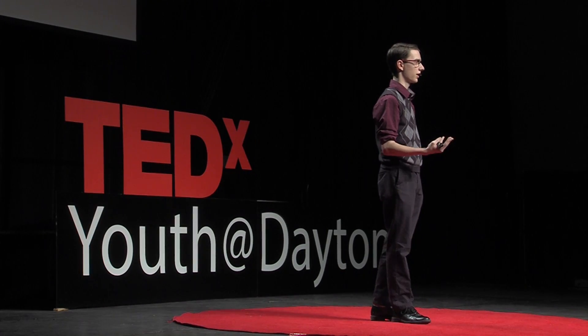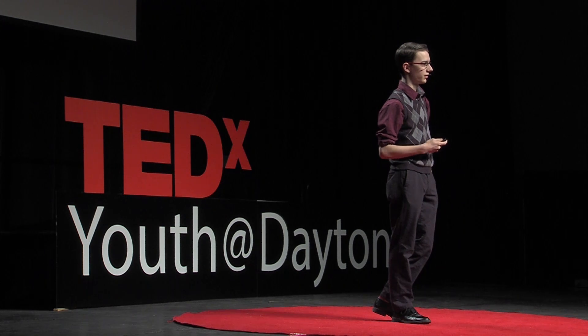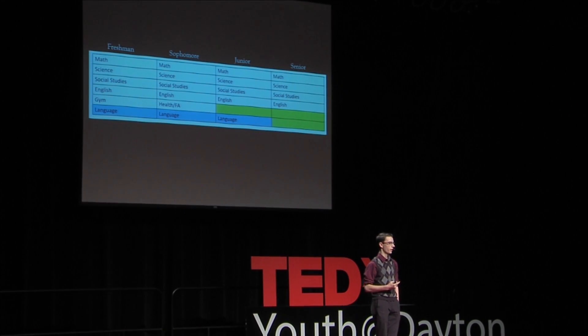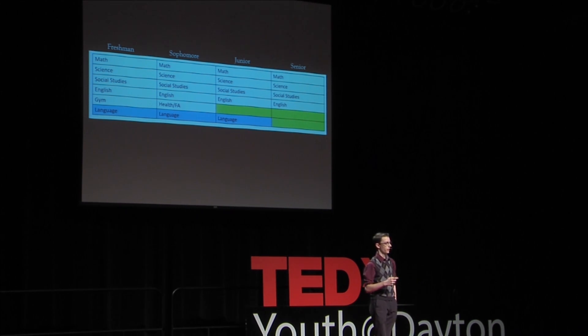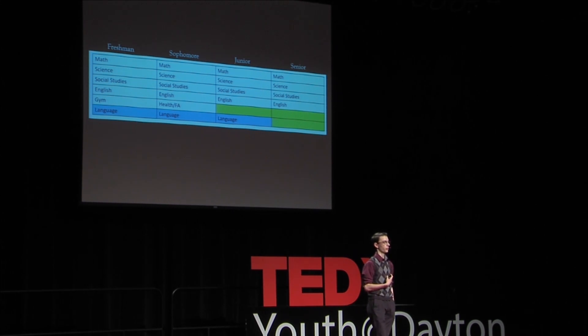With all of this, in most schools in America and across the world, you can't take programming and get a language credit for it. Before I moved to the Miami Valley CTC at Wayne, I had six periods a day. Of those six periods, four were core classes — math, science, English, and social studies. We also had to take a full year of gym, a half year of health, a half year of a fine art, and three years of a foreign language or two years of two different foreign languages. This leaves only two or three open periods, two of them in your senior year — not enough time to really delve into programming and discover all of its capabilities.